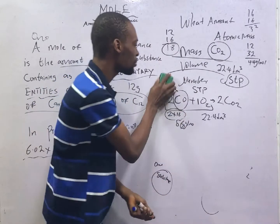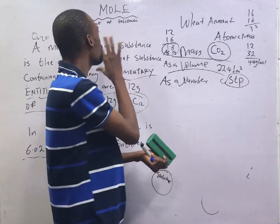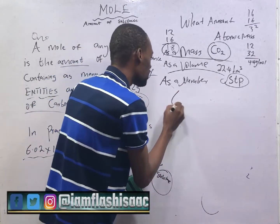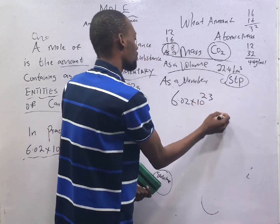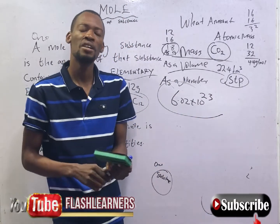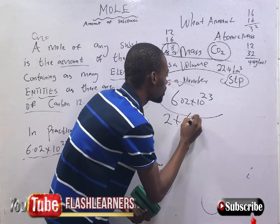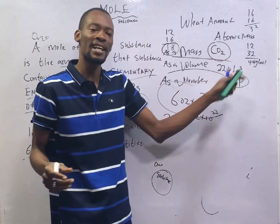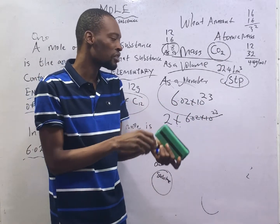Now let's see mole in terms of number. As a number, one mole can be replaced with Avogadro's number, so one mole is simply 6.02 × 10²³. That is one mole as a number, which means two moles of any substance is 2 × 6.02 × 10²³. So one mole of carbon dioxide in terms of number is 6.02 × 10²³; two moles will be 2 × 6.02 × 10²³; three moles will be 3 × 6.02 × 10²³.